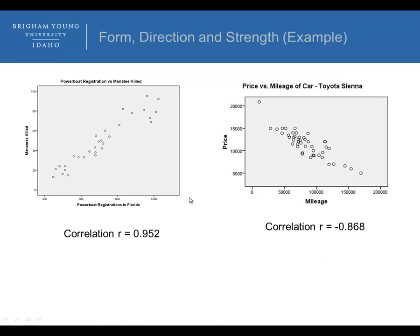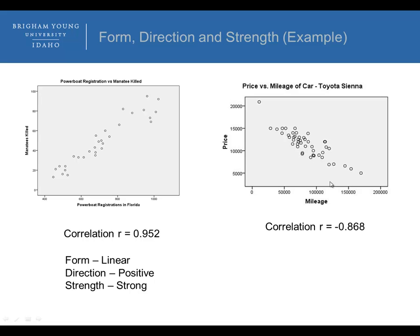Here are a couple more examples. For the powerboat registration versus manatee killed, we see a positive relationship — as one value goes up the other goes up — with R of 0.952, so the form is definitely linear, the direction is positive, and the strength is fairly strong. For price versus mileage of a Toyota Sienna, we see it's going in a negative direction, it looks fairly linear, and the strength is fairly strong — so the form is linear, direction is negative, and strength is strong.